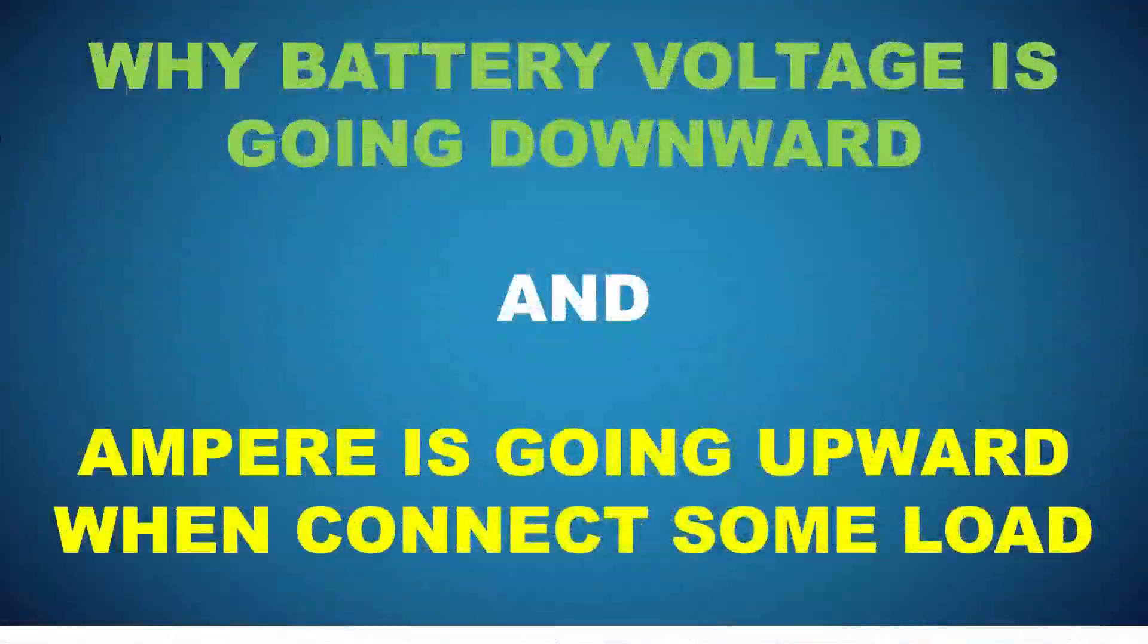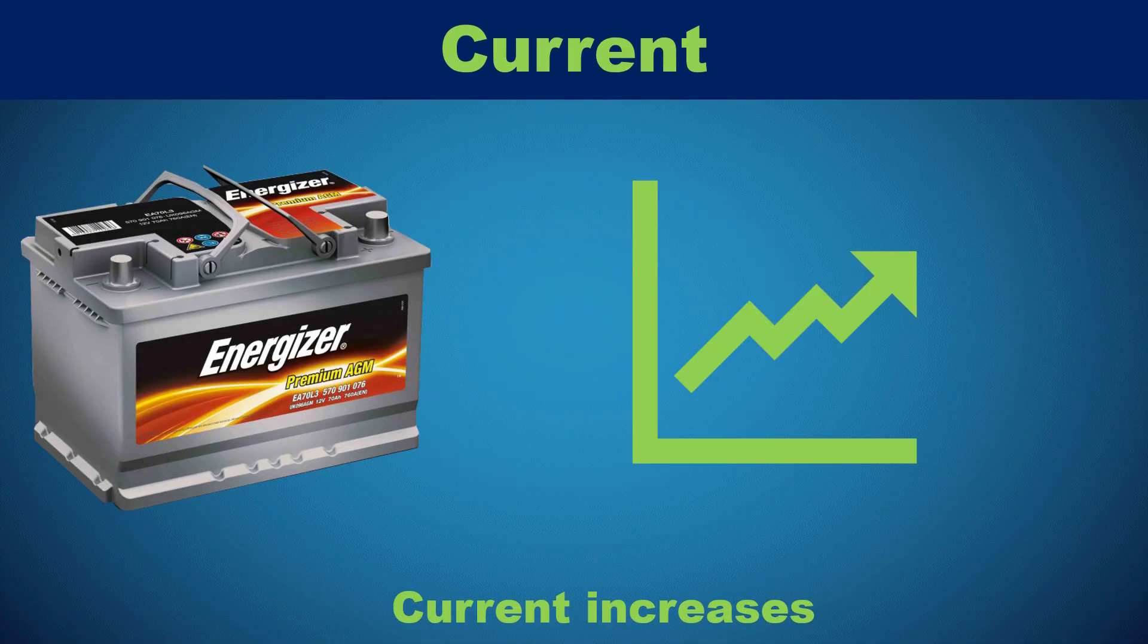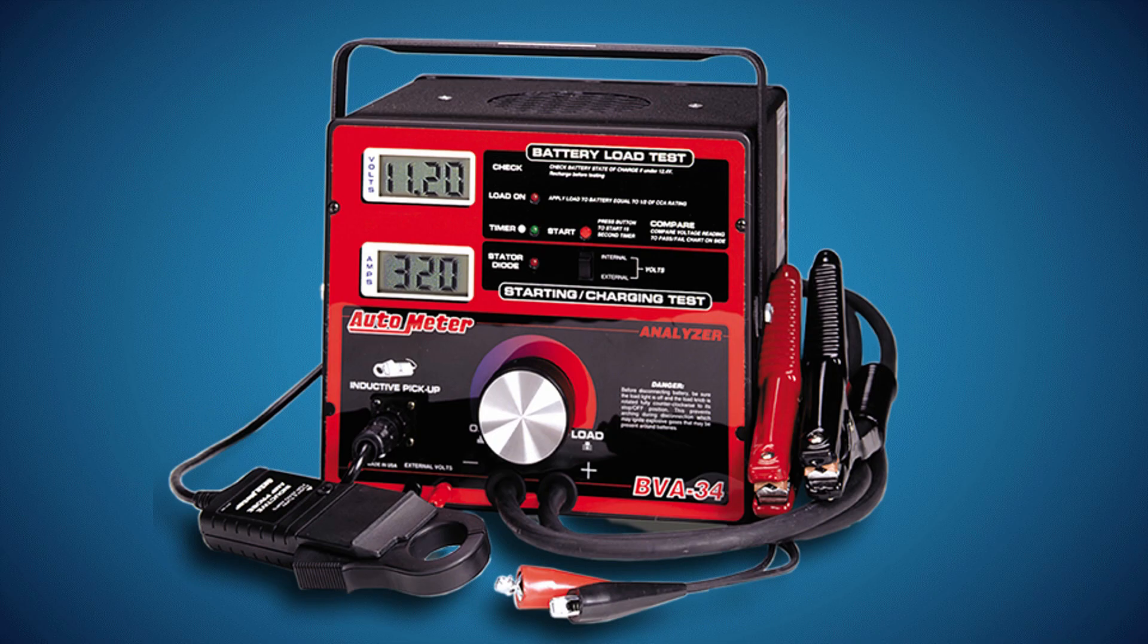Hello everyone, welcome back to my YouTube channel. Today our topic is why battery voltage goes downward and amperage goes upward when we run some load on a battery. So let's start.